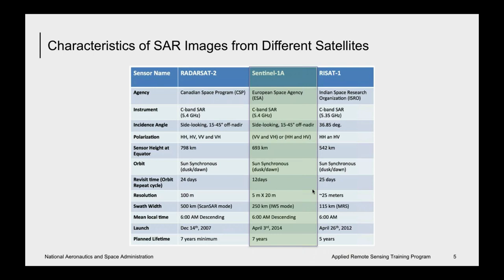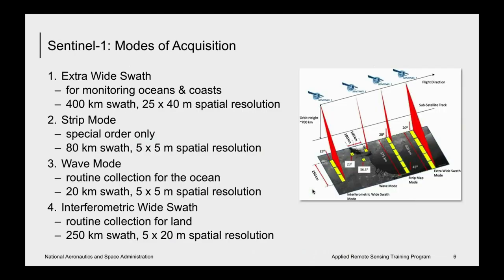There are two Sentinel-1 satellites in orbit, and they both have the same sensor characteristics. One is Sentinel-1A, which was launched in early April 2014, and the other is Sentinel-1B, which was launched two years later in late April 2016. Each satellite has a 12-day temporal repeat, and the two together provide a six-day temporal repeat. The Sentinel-1 data can be freely accessed online.